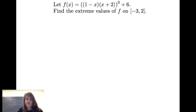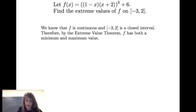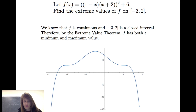Let's look at this example. Let f of x equal 1 minus x times x plus 2, quantity cubed, plus 6. Let's find the extreme values of f on the closed interval from negative 3 to 2. We know that f is continuous — it's a polynomial — and the interval from negative 3 to 2 is closed. So by the extreme value theorem, f has both a minimum and a maximum value. Looking at the graph, we can see pretty much where the maximum and minimum occur on this interval.